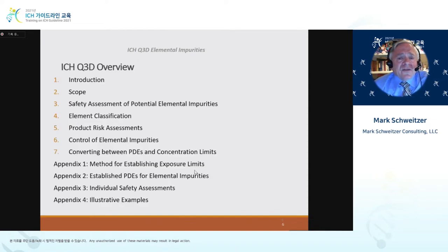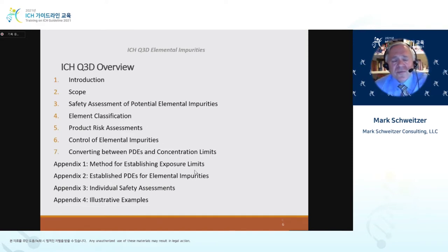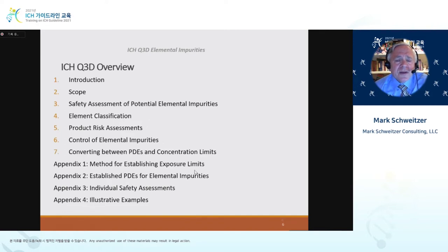The guideline itself was broken down into seven independent sections and four appendices covering specific topics. This is probably one of the more extensive guidelines developed in ICH to provide the data behind the decisions and recommendations, especially around the permitted daily exposures for the elements of concern.